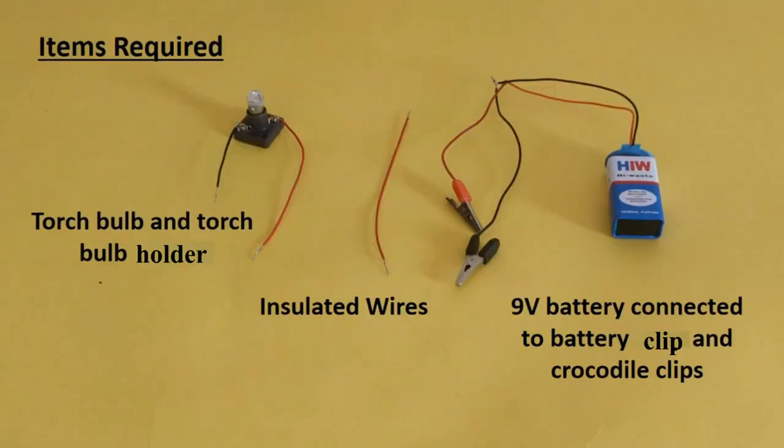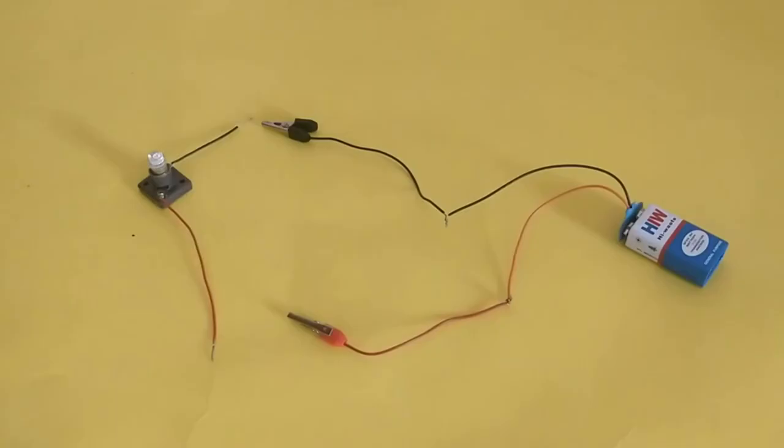Look at the materials required. Here, torch bulb and torch bulb holder and insulated wires, 9 volt battery connected to the battery clip and crocodile clips.